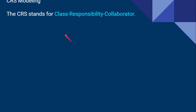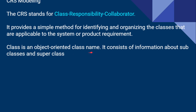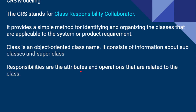Now let us see what is CRC modeling. CRC stands for Class Responsibility Collaborator. We have to find out the classes available, the responsibility of each class, and how the classes collaborate — that is, communicate with each other — to get the process done. It provides a simple method for identifying and organizing the classes applicable to system or product requirements. The class is an object-oriented class name and consists of information about subclasses or superclasses. Classes come in many hierarchies — one parent class, many parent classes, many subclasses, many children classes — depending on the organizational hierarchy. Responsibilities are based upon the attributes and operations of the objects that come under a class.